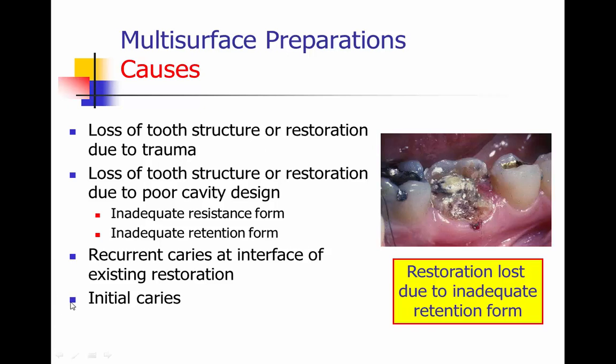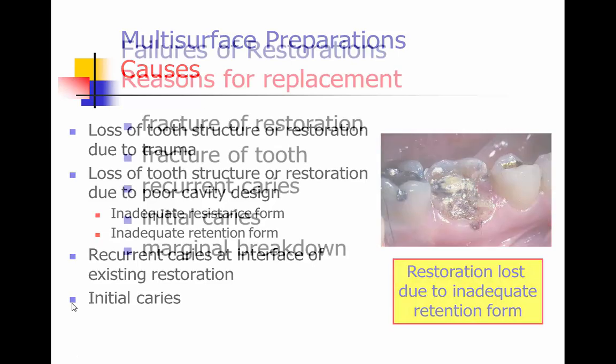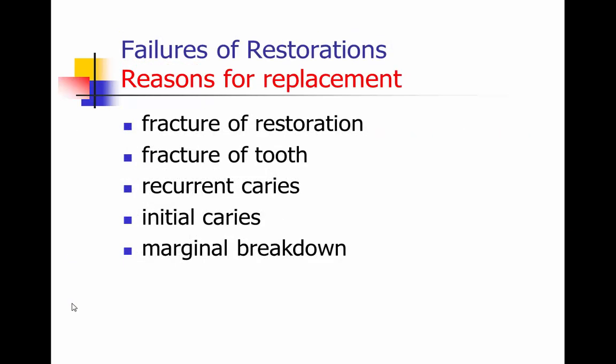Or it may be a tooth with initial caries where the patient hasn't been seen for a long period of time, so much tooth is missing that the only choice for restoration will be a foundation, and a crown will be the definitive restoration for that tooth.